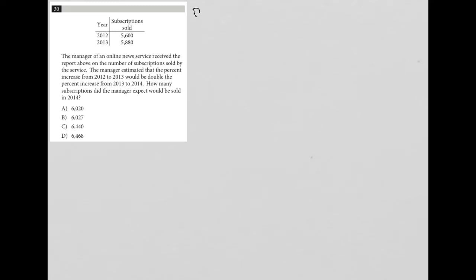This question is technically a diagram question. Any question that provides visual input, I'm going to call a diagram question. This looks like the information is set up as a table. So we have years, two years, 2012 and 2013, and then subscriptions sold for those years, 5,600 for 2012 and 5,880 for the year 2013.